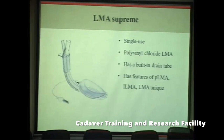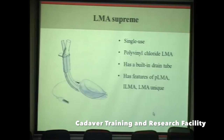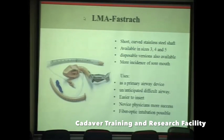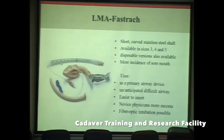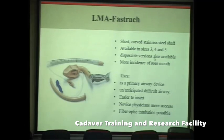The LMA Supreme is a disposable version of the ProSeal LMA, recommended for single use, made of PVC, with a built-in gastric drain tube and integrated features of the ProSeal LMA, intubating LMA, and LMA Unique. The intubating LMA — FastTrack — consists of the intubating LMA itself, an introducer, and a special silicone endotracheal tube with a tapered end and smaller cuff. It has a short curved stainless steel shaft and is easier to insert, but its rigidity means it can be more easily dislodged. It is available only in three adult sizes: 3, 4, and 5.